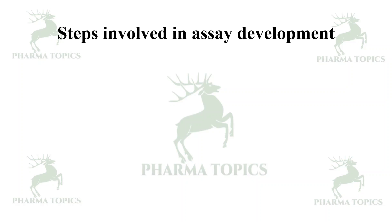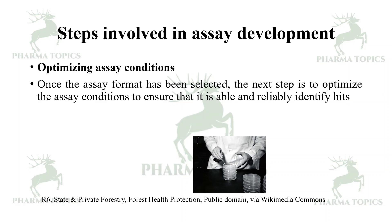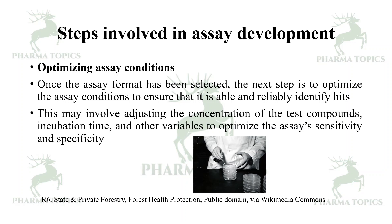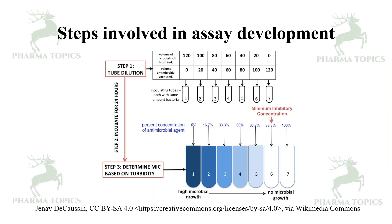The next step in assay development is optimization of the assay conditions. Once the assay format has been selected, you optimize the conditions to ensure it is able to reliably identify the hits. This may involve adjusting the concentration of the test compounds, the incubation time — for example day one, day two, day three — and other variables to optimize the assay's sensitivity and specificity.